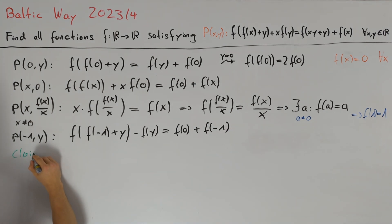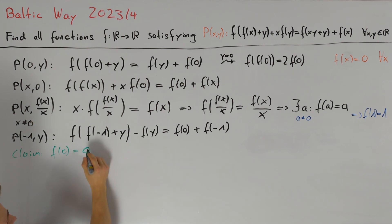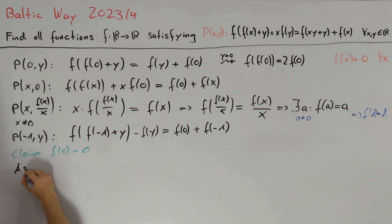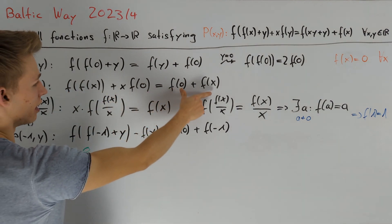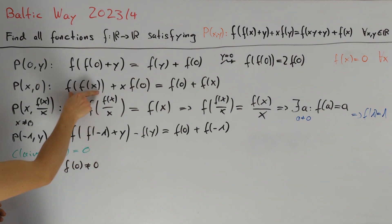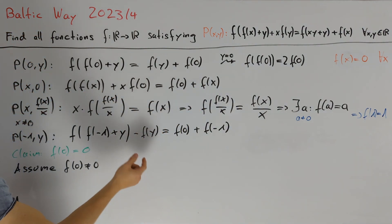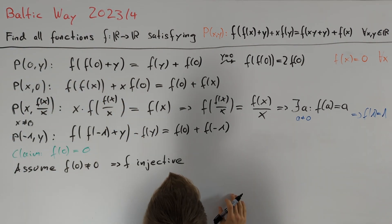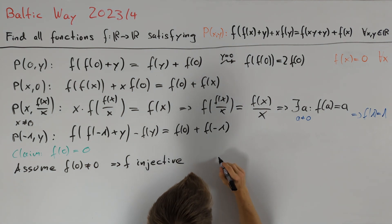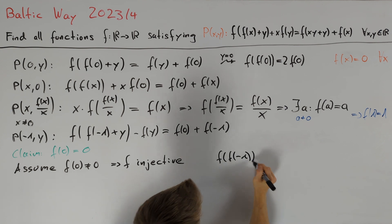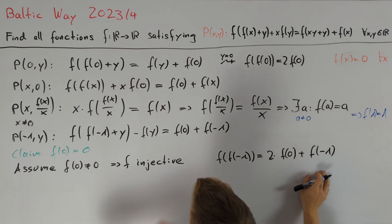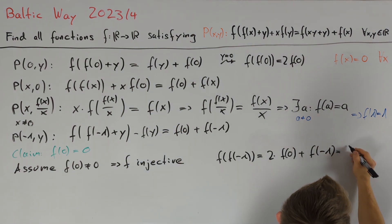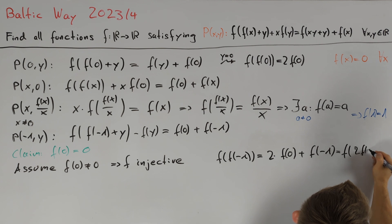We are now ready to prove that f(0) = 0. We assume for contradiction that f(0) ≠ 0. This implies f is injective, because if f(a) = f(b), plugging into our earlier equation and dividing by f(0) gives a = b. Using y=0 in the x=-1 equation, we get f(f(-1)) = 2·f(0) + f(-1). Using the first equation, this equals f(2·f(0) - 1), and by injectivity, f(-1) = 2·f(0) - 1.